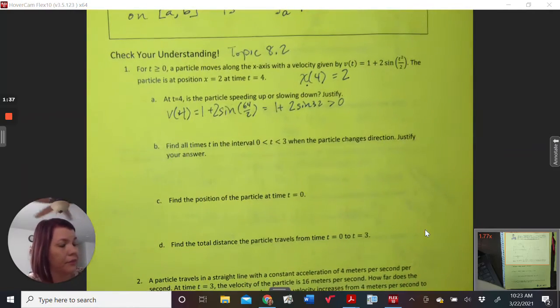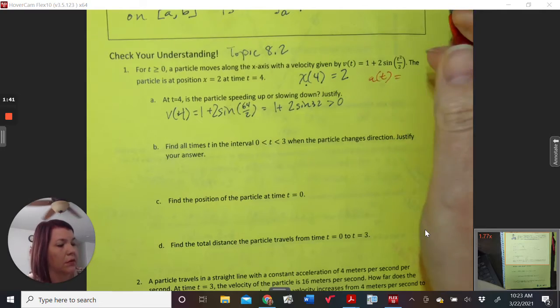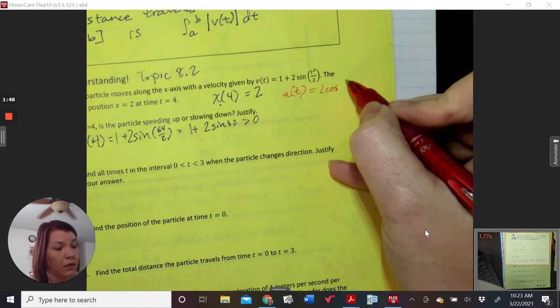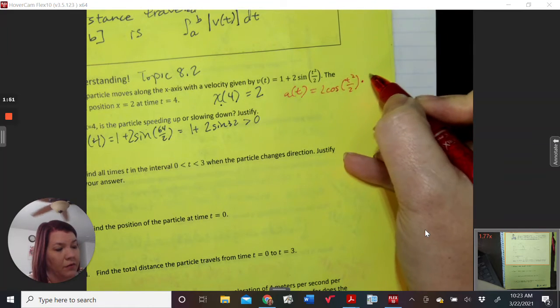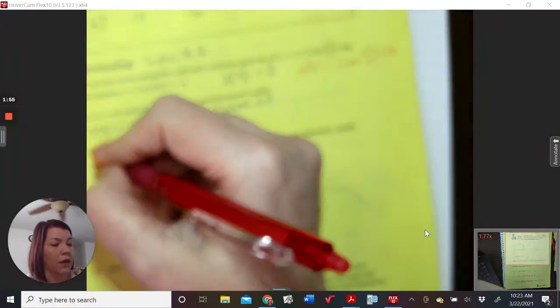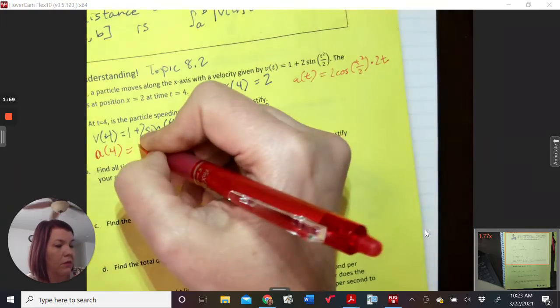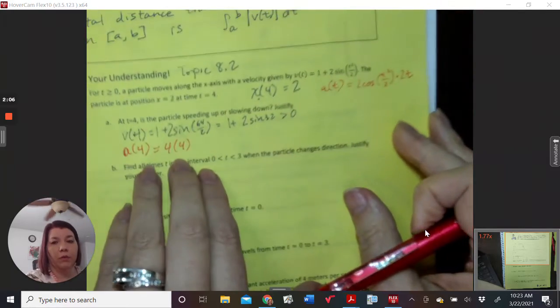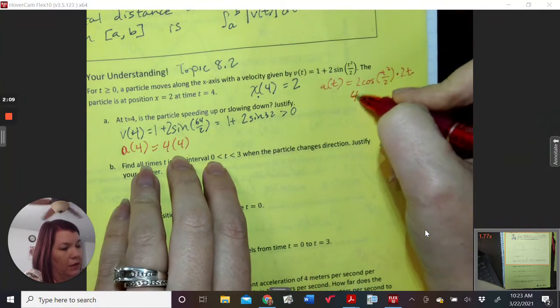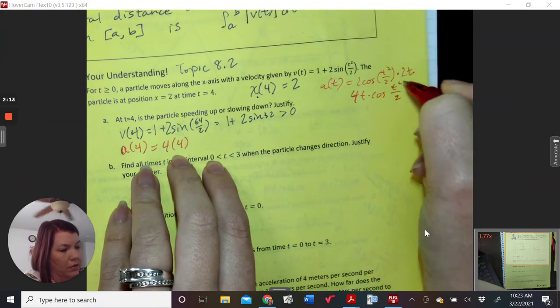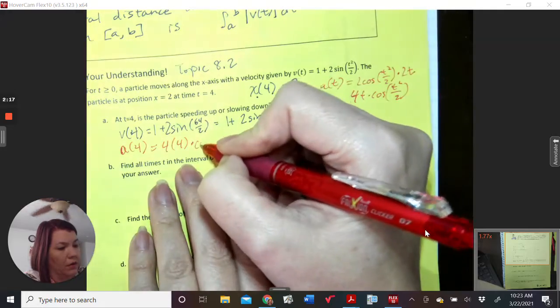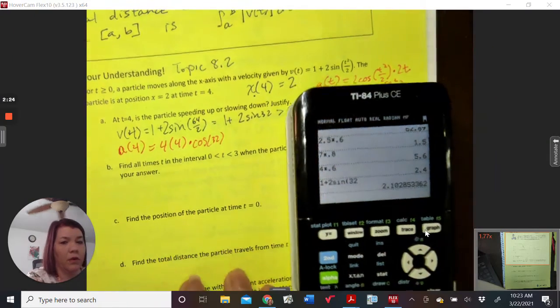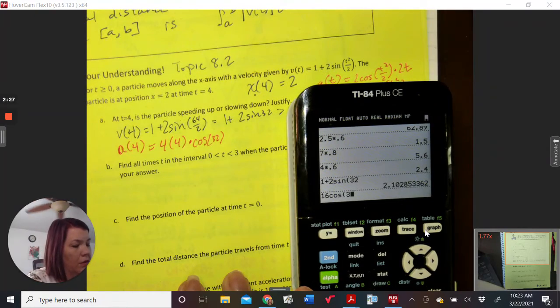So then I need a. So a of t equals derivative of 1 is 0. So this is going to be 2 cosine of t squared over 2 times the derivative of the cosine 2t. So that becomes a of 4 equals 4 times 4, because 2 times 2 is 4, and there's t. So I just rewrote this as 4t times cosine times cosine of 32. That's going to be the same. And so I'm going to end up with 16 cosine 32, which is also positive.